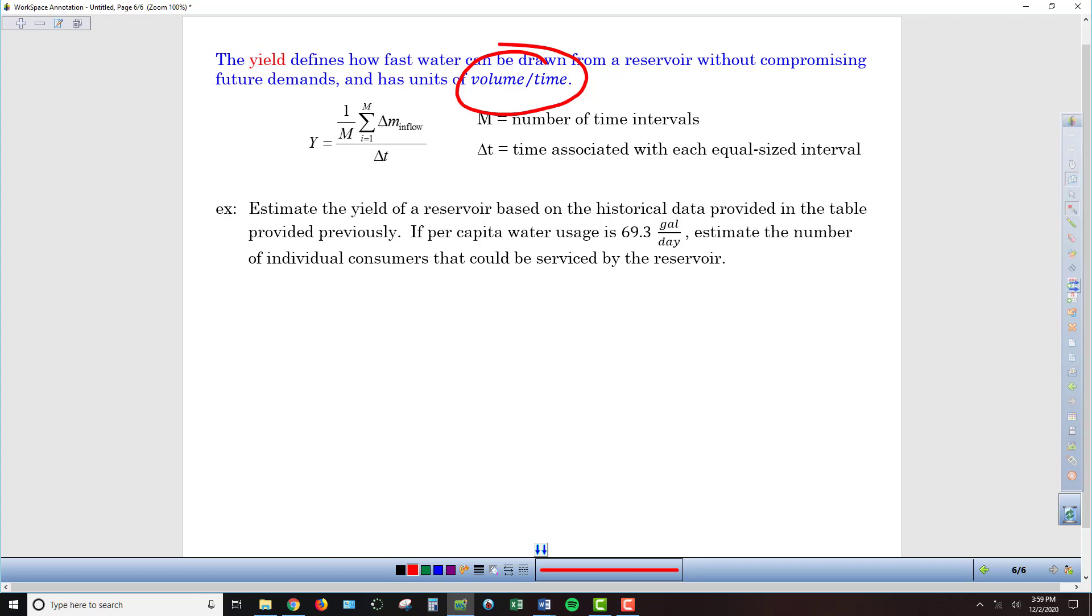We want that to match. We want whatever's coming into the reservoir over an extended period of time to match what we're drawing out. So the calculation for yield is as follows. First of all, the delta T in the denominator, it's part of this equation but we really don't need it. It's just going to be 1 for our purposes. So right off the bat, ignore that piece of this equation.